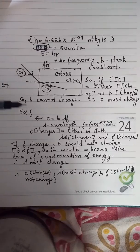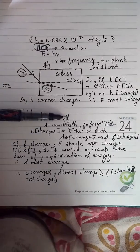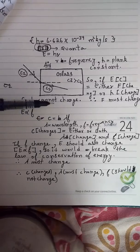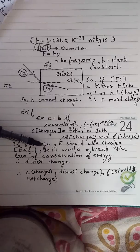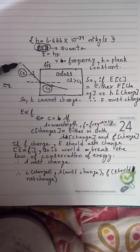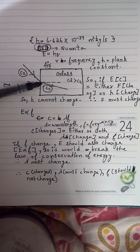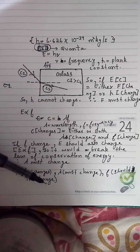So in order to balance the equation, if frequency is not changing and speed of light is changing, then wavelength must change. And so, if light moves from one medium to another, its wavelength always changes, but its frequency never changes.